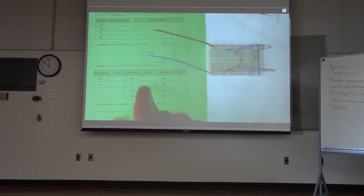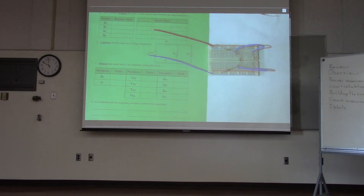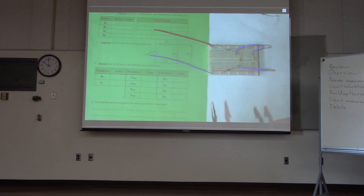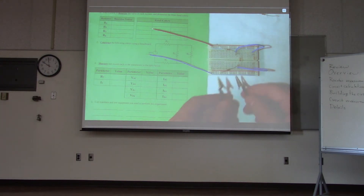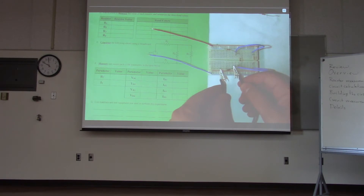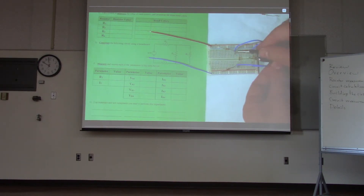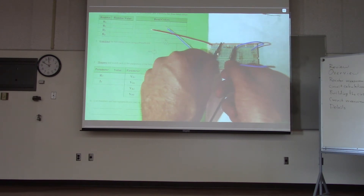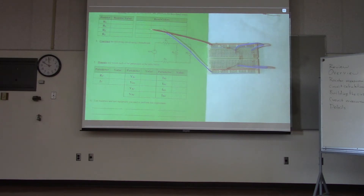Voltage is the easier measurement because it's non-destructive — you don't have to take the circuit apart. To measure voltage across a resistor like R4, put the meter in voltage mode, connect it to the power supply, and touch the ends of your meter to the two sides of the resistor. The measurement appears on screen.